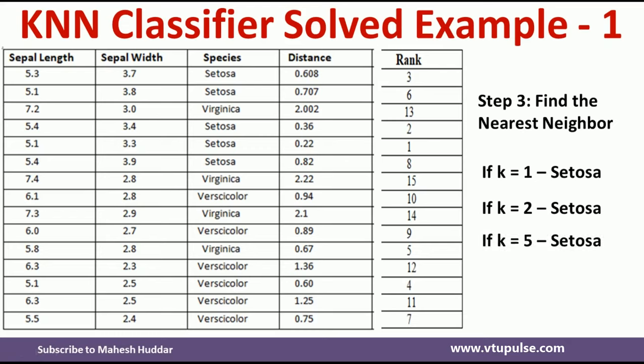This is the simple process to classify a new example into one of the classes using the k-nearest neighbor classifier. First, calculate the distance of the new example with respect to all the training examples. Second, identify the rank of each example. Third, depending on the value of k, identify the class for the new example by majority vote.